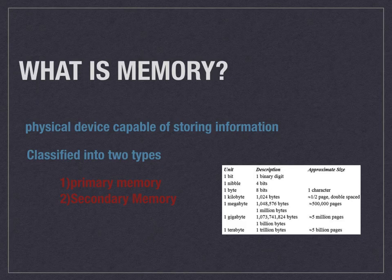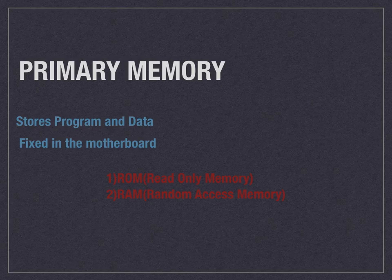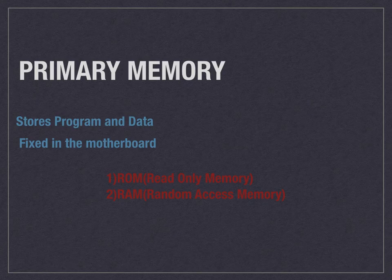Now we'll see what primary memory is. Primary memory is also known as main memory or internal memory. All types of computer memories that can be directly accessed by the processor are called primary memory. This allows a processor to access running programs or currently processed data stored in memory locations.